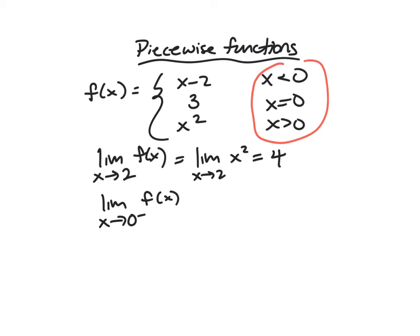So if I'm looking at the left, this one would be looking at points less than zero. So I would be using the limit as X approaches zero of x minus 2. And again, I'm not caring about the point at it. I don't care that it's 3 at zero.